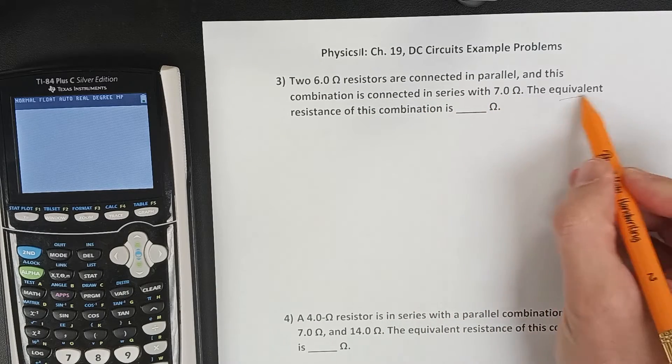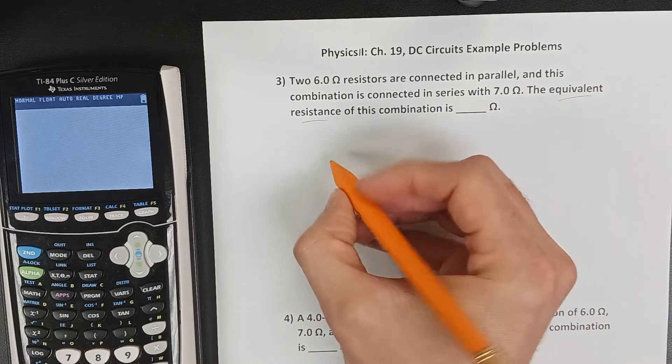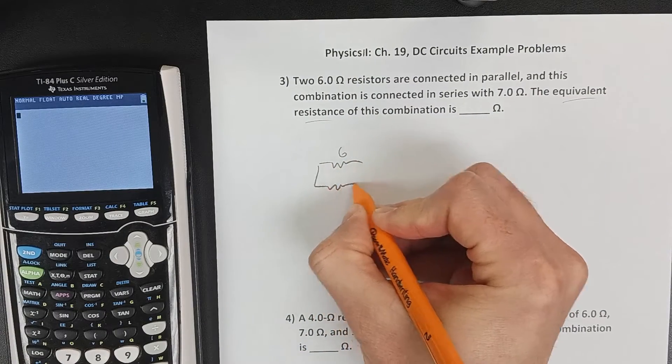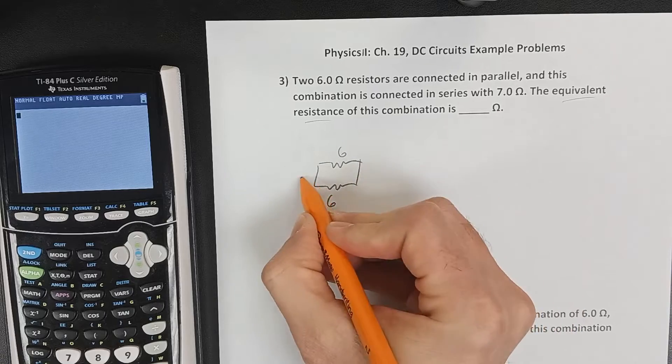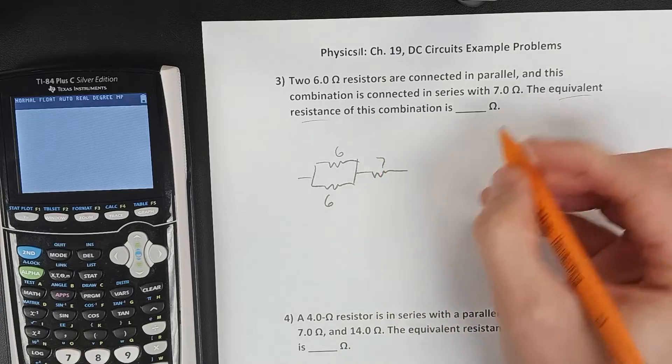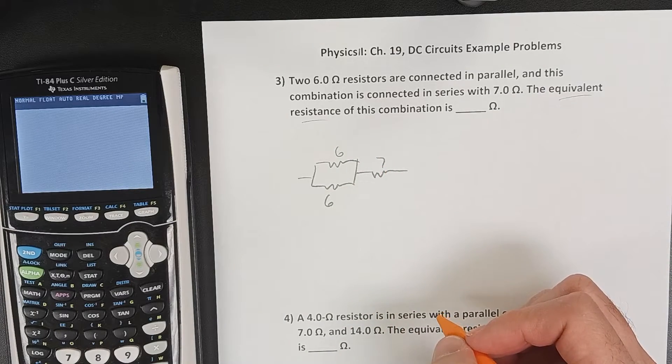We want to solve for the equivalent resistance, so first let's draw ourselves a little sketch here. We have two 6 ohm resistors that are in parallel with one another, and then that's connected in series with a 7 ohm resistor.